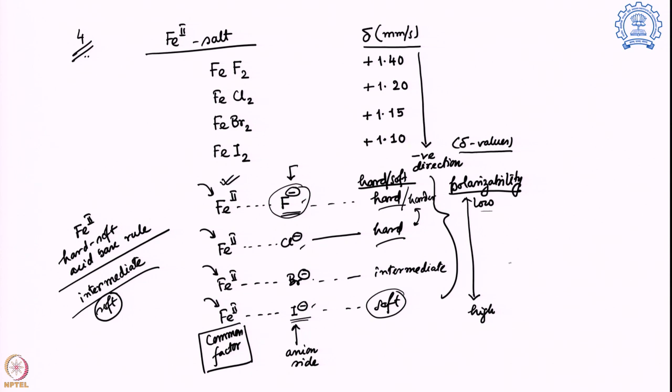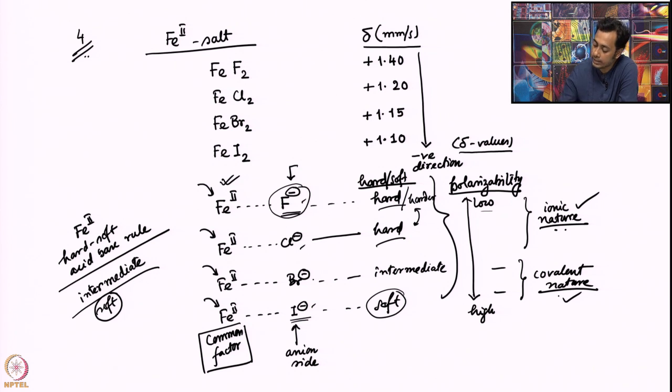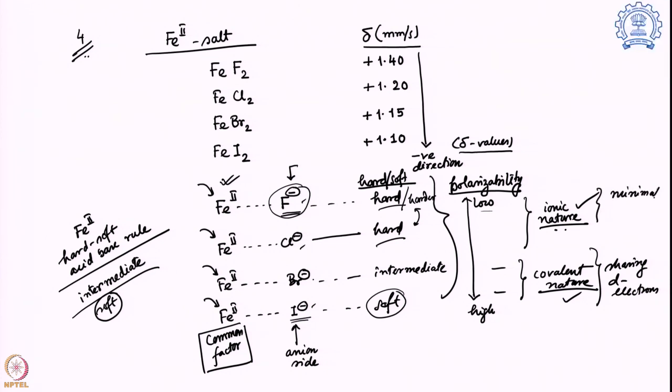When it is of softer nature, iron bromide and iron iodide they will be more of covalent nature because they are softer in nature. They will be much more interested to share the electron density among them, whereas chloride and bromide they will be more in ionic nature. The ions will like to keep their charge and electron density more closer to themselves rather than sharing it. That is defined: this is ionic, this is covalent nature. And if it is ionic in nature, this iron fluoride and iron chloride, what will happen? The iron is going to keep its d electrons to itself.